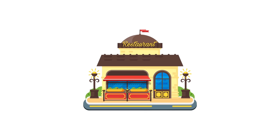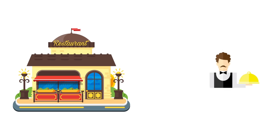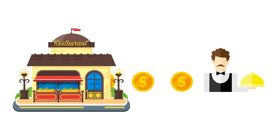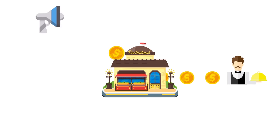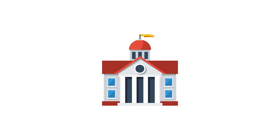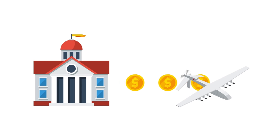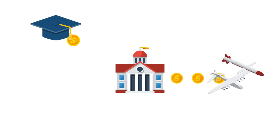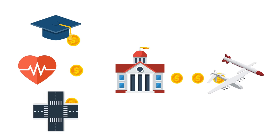When a restaurant makes a choice to pay its servers higher wages, it may have to be at the cost of spending money on advertising, or buying new appliances, or even paying its custodians higher wages. When a government makes the choice to spend more money on combat drones and bombs, it may have to be at the cost of spending more money on education, healthcare, or fixing roads.